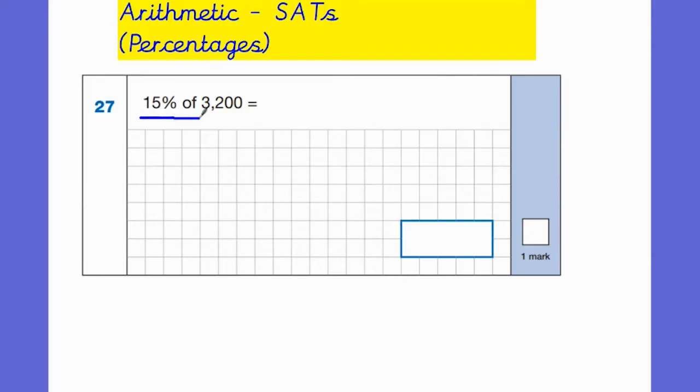So this first question, 15% of 3,200. Now I know when I was in school they learned it a certain way where we'd find 10% and then find 5% and then add them together. There's nothing wrong with that way, so to find 10% you would do 3,200 divided by 10 and then 5% would obviously be half of that and then you'd add it all together.